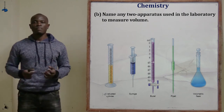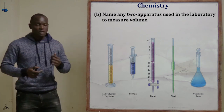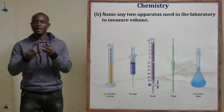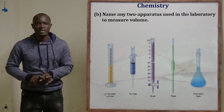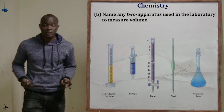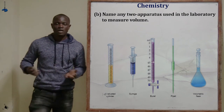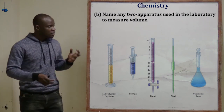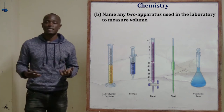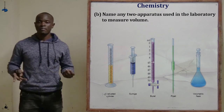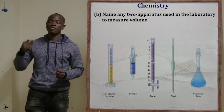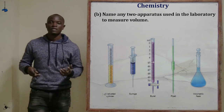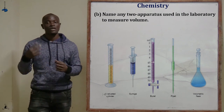Part B asks you to name two apparatus used to measure volume in the laboratory. There are many: the round bottom flask, graduated beaker, measuring cylinder, syringe, graduated jugs, volumetric flask, pipette, burette, and conical flask. You should know at least five apparatus used to measure volume in the laboratory.